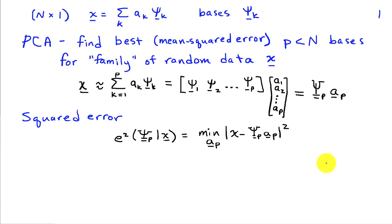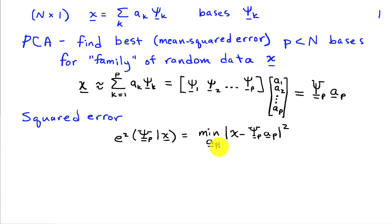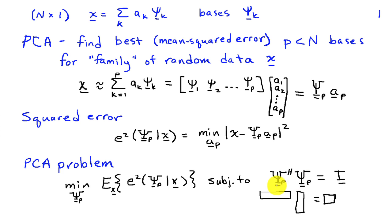The error when representing x using p basis vectors is given by the minimum squared difference between x and our rank-p approximation, where we choose a_p in the best way possible. The PCA problem is to minimize the average value of this squared error over different choices of x — taking an expectation with respect to x — and finding the set of basis vectors, the matrix psi_p, that minimizes this, subject to the constraint that psi_p conjugate transpose times psi_p equals the identity matrix.